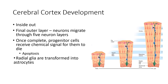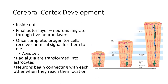The radial glia — the middle section — eventually start to be transformed into astrocytes. As you may remember from chapter two, astrocytes are part of the glial cell family, the supporting cells for the central nervous system — star cells performing all kinds of supporting functions for neurons. After this happens, the neurons that are now in place begin to connect with each other when they reach their final outward locations.